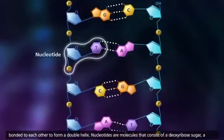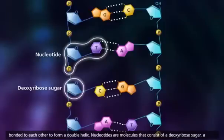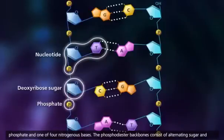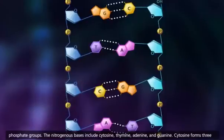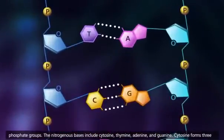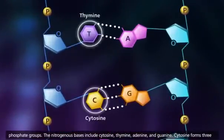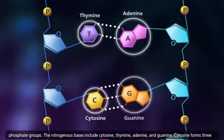Nucleotides are molecules that consist of a deoxyribose sugar, a phosphate, and one of four nitrogenous bases. The phosphodiester backbones consist of alternating sugar and phosphate groups. The nitrogenous bases include cytosine, thymine, adenine, and guanine.